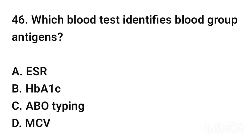Question number 46. Which blood test identifies blood group antigens? The correct answer is option C: ABO typing.